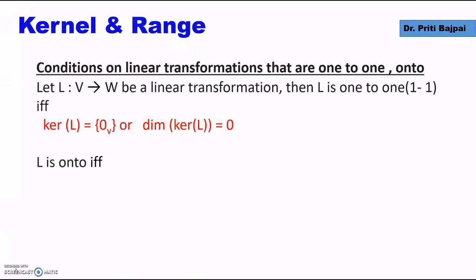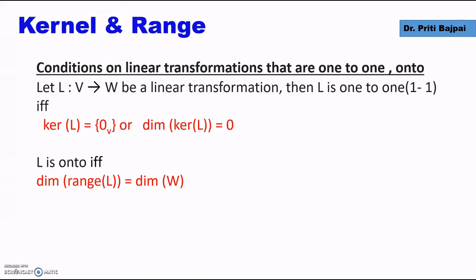Now, when is a linear transformation one-to-one and onto? Given a linear transformation L from V to W, it is one-to-one whenever the dimension of the kernel L is 0, or equivalently the kernel of L has only the zero vector of V. And it is onto if and only if the dimension of the range L equals the dimension of W.